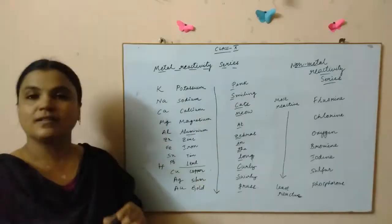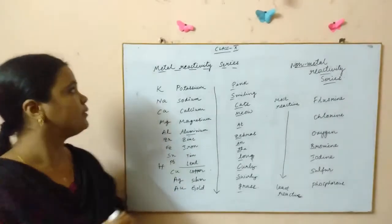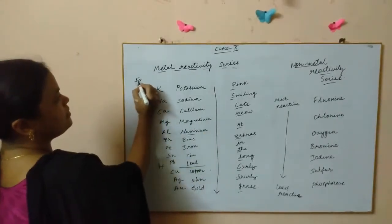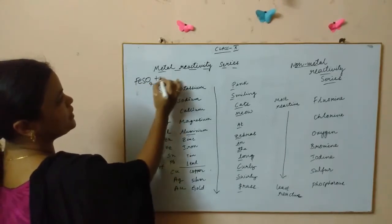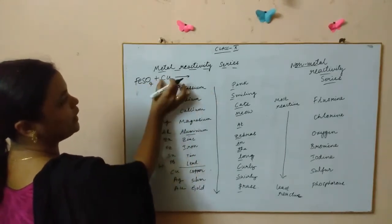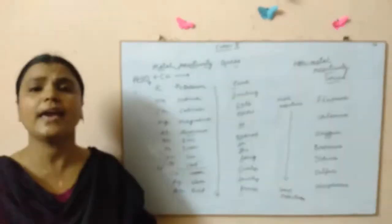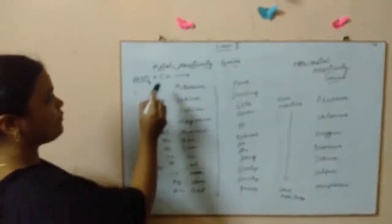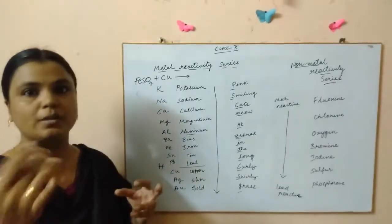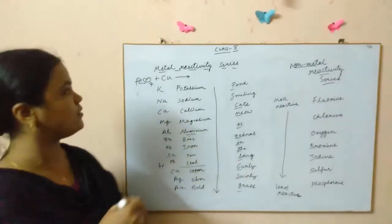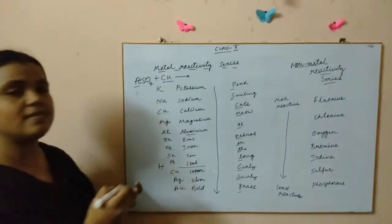If it is higher, if it is at a position higher or above a particular element, then it is more reactive than that element. Let's see an example like iron sulfate: when a copper nail, copper coin or metal is dipped in iron sulfate solution, can reaction happen?